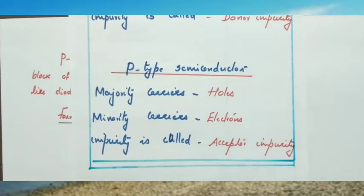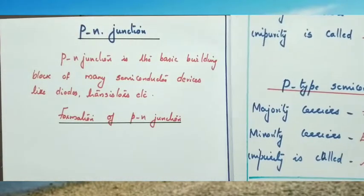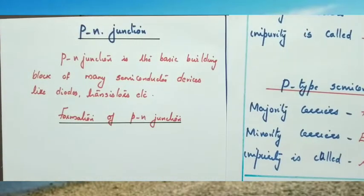The impurity donates one electron for conduction. Now, in a P type semiconductor, majority carriers are holes, minority carriers are electrons, and the impurity is called an acceptor impurity. Now we can discuss the formation of the PN Junction.